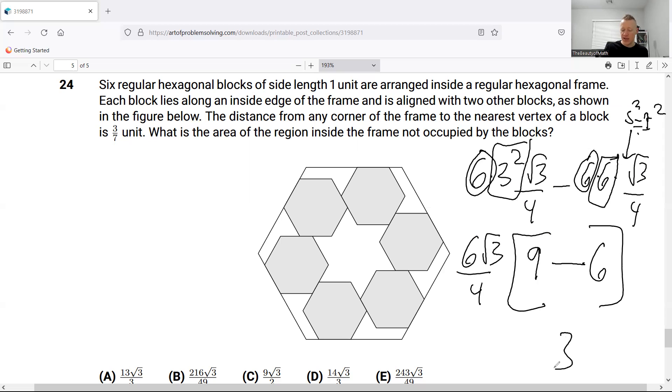Nine minus six is three. Six over four is three over two. Then I'm going to have three root three over two times three. Answer nine root three over two. And that is the answer to this question.